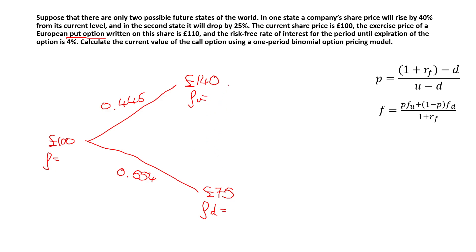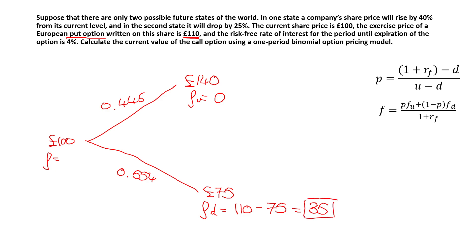To calculate the option prices for the put: in the first state, the share price is £140 and the exercise price is £110. Because this is a put option, the investor benefits when the share price goes down. Since the share price is higher than the exercise price, the option wouldn't be exercised — it's worthless, fu = 0. In the second state, the share price of £75 is below the exercise price of £110, so the investor makes money: fd = £110 − £75 = £35.